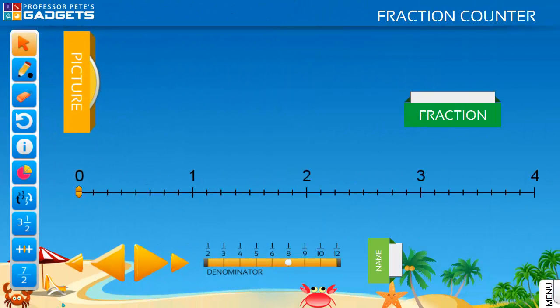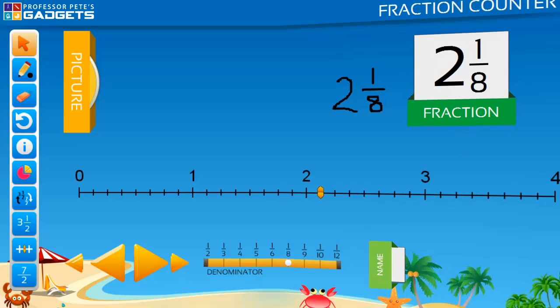Hide the pictures, name and fractions on the number line and move the marker. Ask your students to name the fraction at that point on the line. Reveal the fraction to self-correct answers.